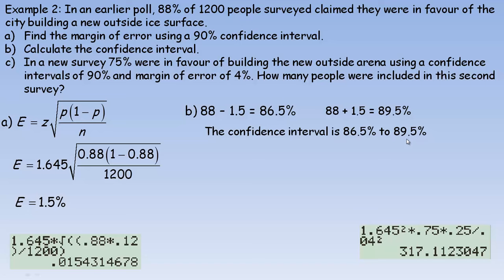That's the confidence interval for part B. Now for part C, in a new survey, 75% — instead of 88% — were in favor of building the new outside arena, using a confidence interval of 90% and a margin of error of 4%. We're told the confidence interval of 90% and the margin of error is 4%, and we're asked to find how many people were included in the survey. In this formula we know z, we know e, we know p, and we're trying to find n.